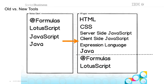In the old Notes client world you had four major tools: Formulas, LotusScript, JavaScript, Java. In the XPages world you have more: HTML, CSS, two flavors of JavaScript, something called Expression Language, and Java. And you could still kind of use Formulas and LotusScript. It's just like you've got more things to work with — your hands aren't tied. In XPages you can use Java everywhere, not just in agents. You can use it to populate a field on a form, or to create a save action.